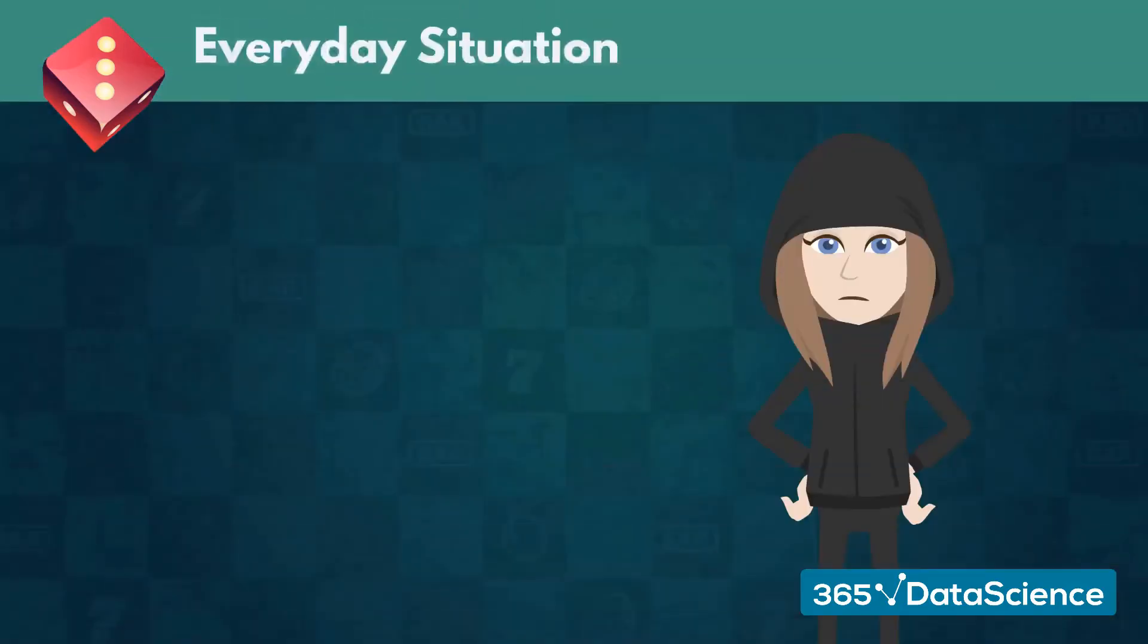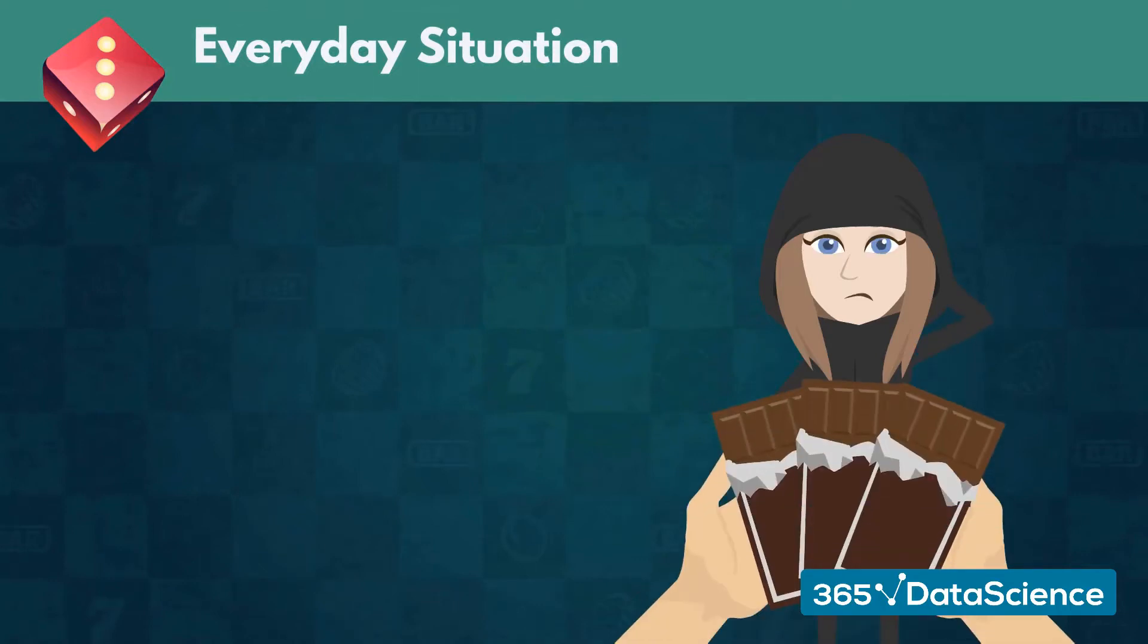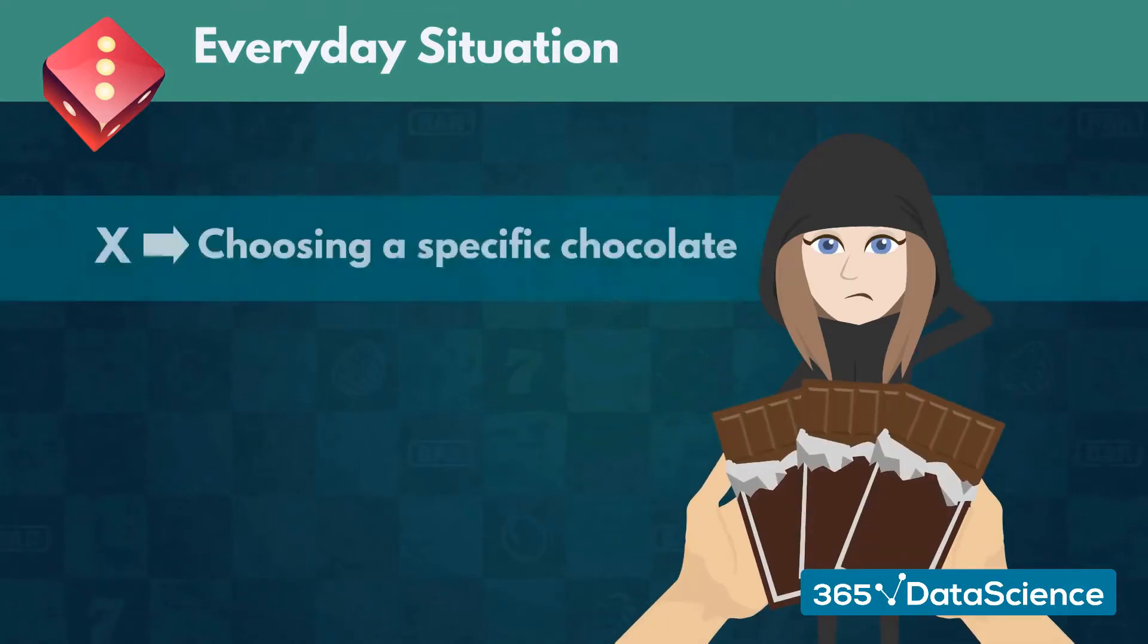Not only that, but many everyday situations follow the uniform distribution. If your friend offers you three identical chocolate bars, the probabilities assigned to you choosing one of them also follow the uniform distribution.